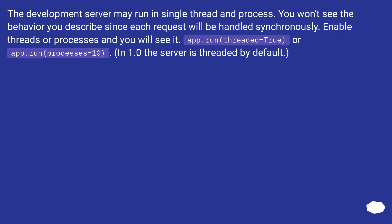The development server may run in a single thread and process. You won't see the behavior described since each request will be handled synchronously. Enable threads or processes and you will see it: app.run(threaded=True) or app.run(processes=10). In version 1.0, the server is threaded by default.